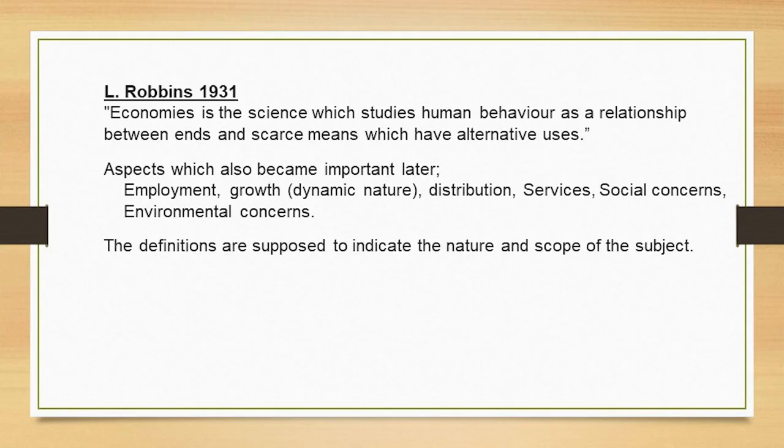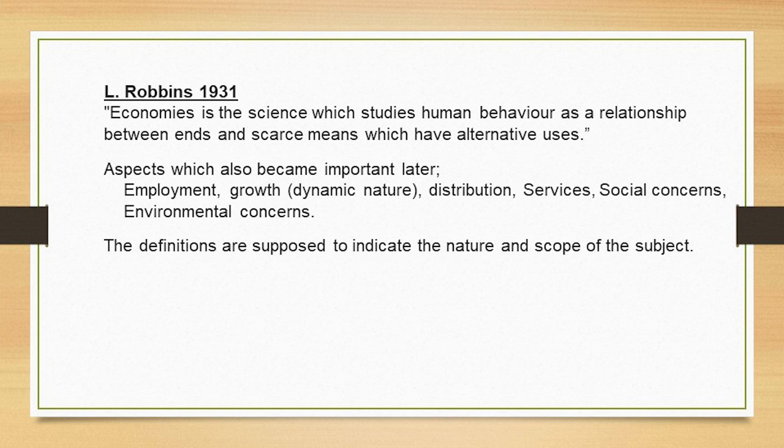One may criticize these ideas, but it's better to take what is useful and proceed to the next. The first landmark was the wealth-centered idea; the second was the welfare-centered idea. The third, and very important idea, was given by Lionel Robbins in 1931. Robbins directly termed economics as a science and talked about ends, the means — that is, the resources — the alternative uses, and choice-making. He has been very concise in defining economics.